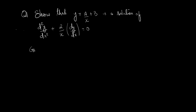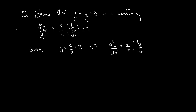So given y = a/x + b, this is equation 1. And d²y/dx² + (2/x)(dy/dx) = 0 is equation 2, which is the differential equation. We need dy/dx and d²y/dx² from equation 1 and substitute into equation 2 to see whether it reduces to an identity.